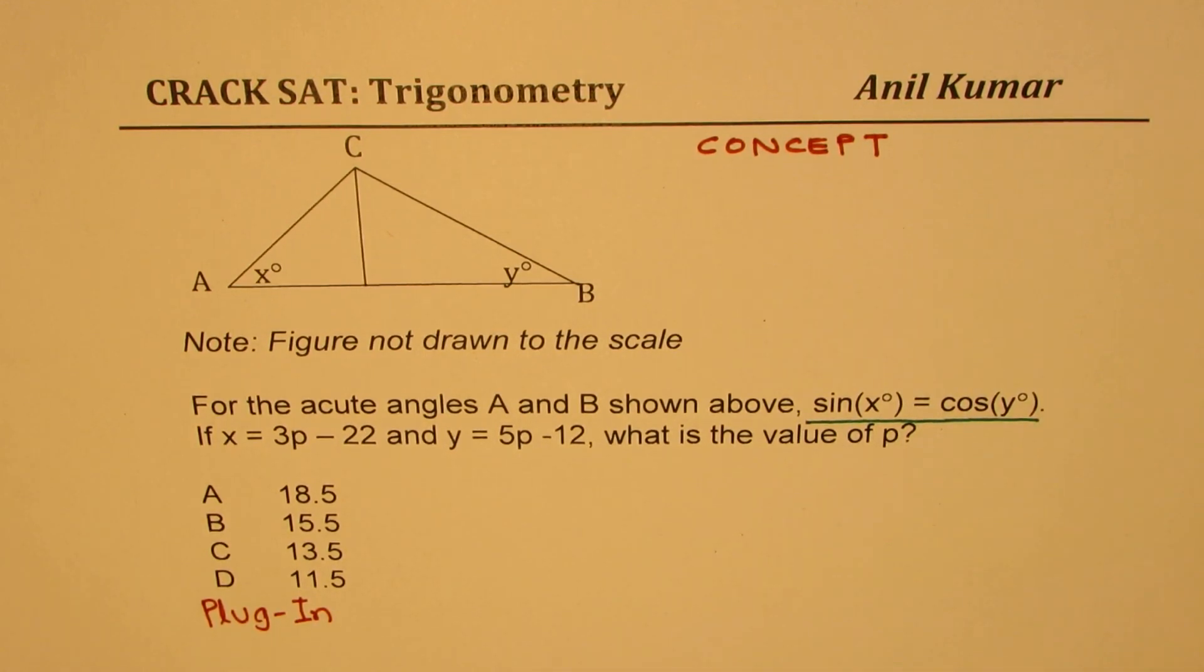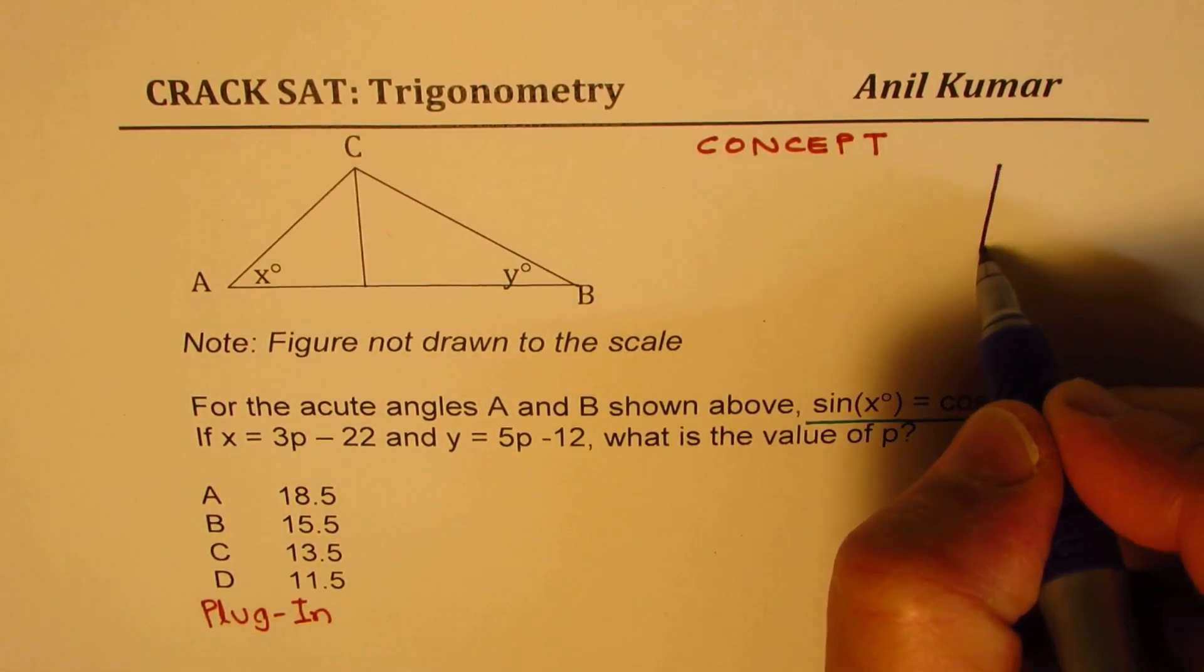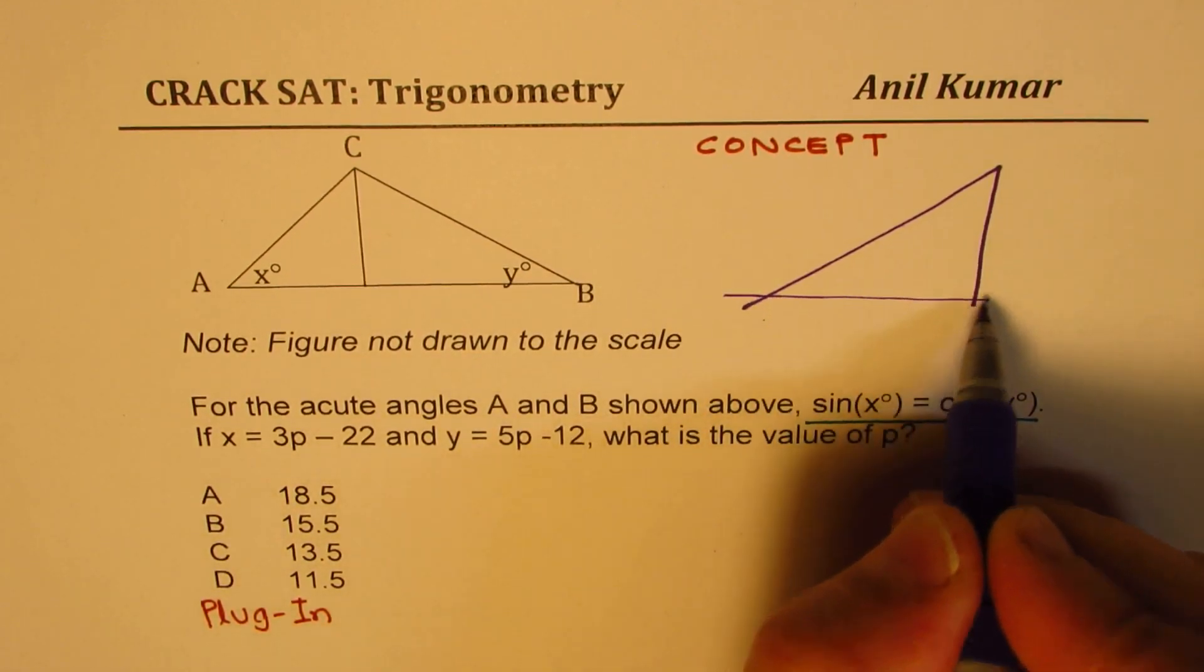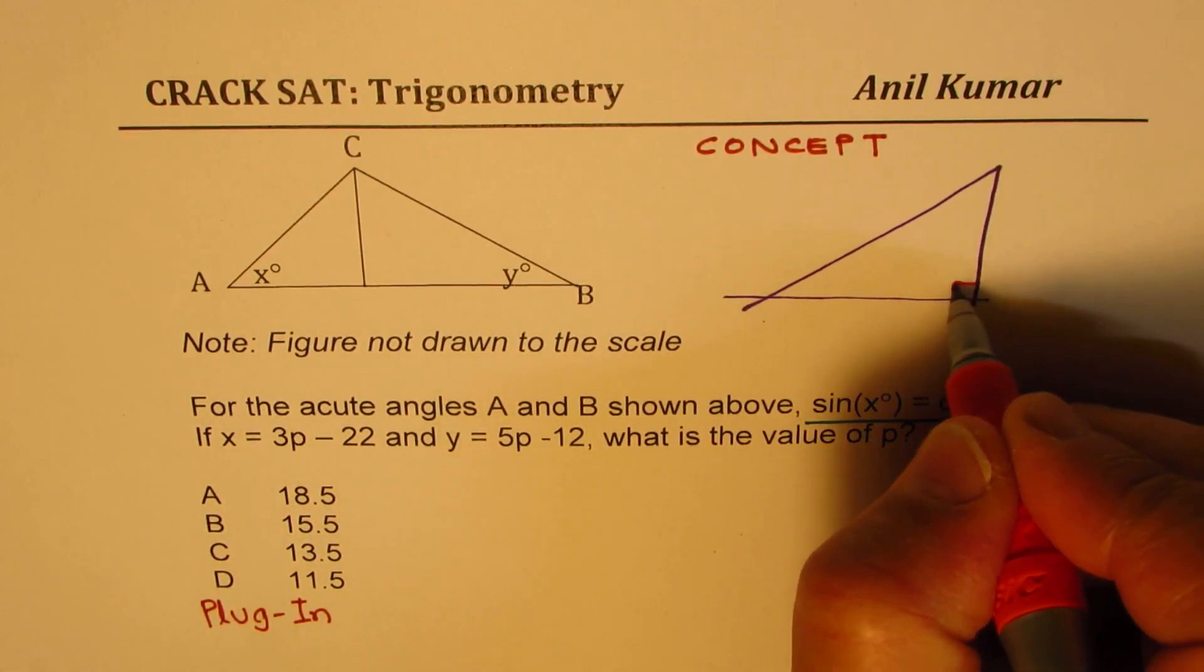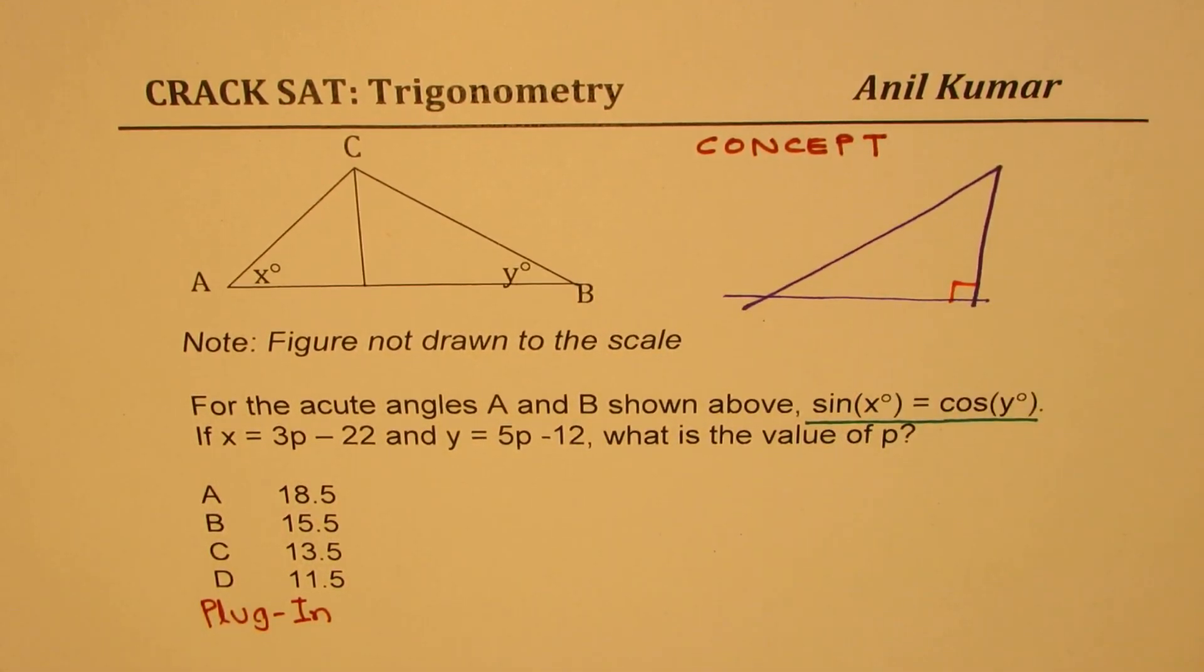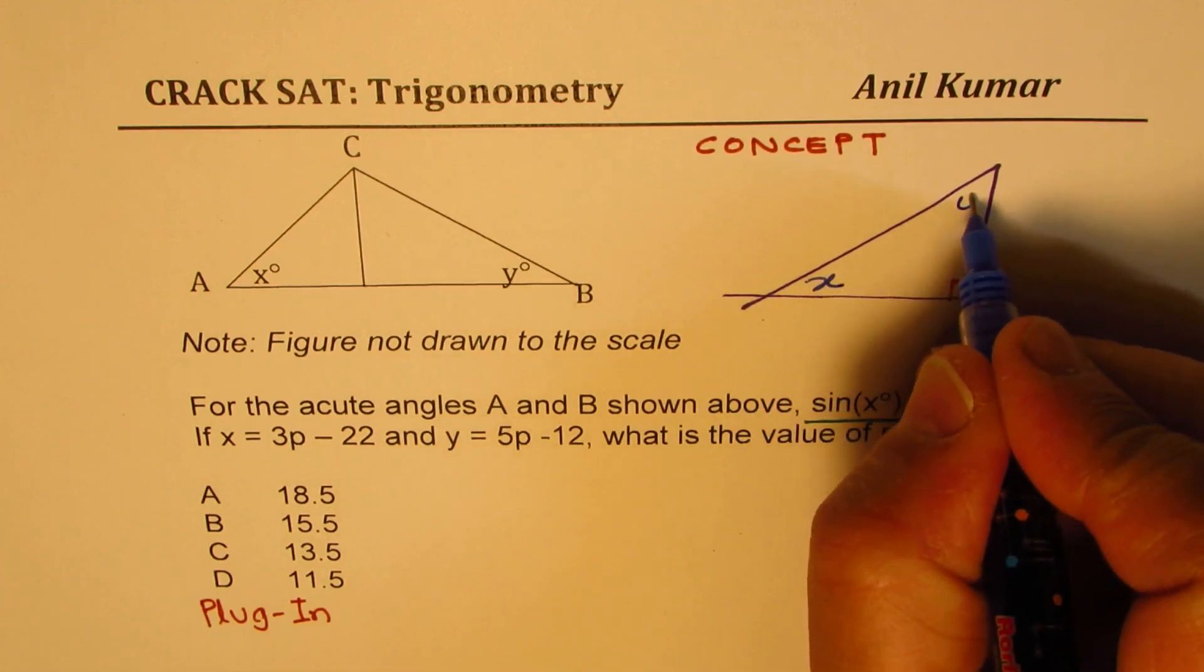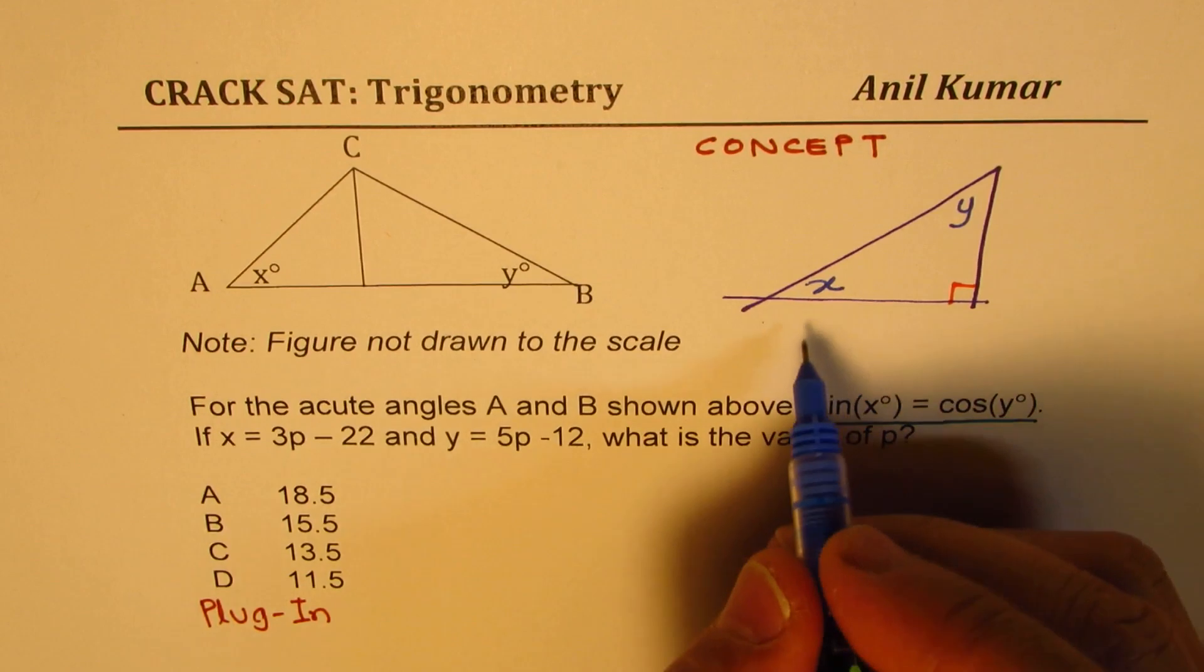So whenever you have a question which says sine x equals cosine y, as soon as you read the statement you should think about a right triangle. Let me make one here for you. So in a right triangle, let's say the two angles are x and y.